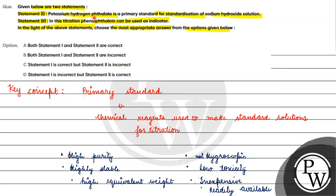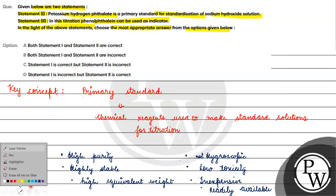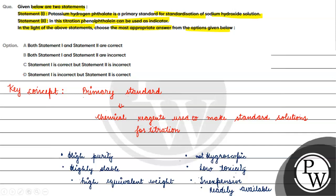Potassium hydrogen phthalate (KHP) works as a primary standard for the standardization of sodium hydroxide — so Statement 1 is correct. In this titration, phenolphthalein can be used as an indicator; it is an acid-base indicator and when sodium hydroxide is added, the color changes from colorless to pink. So Statement 2 is also correct. Therefore, both statements are correct and the answer is Option A.